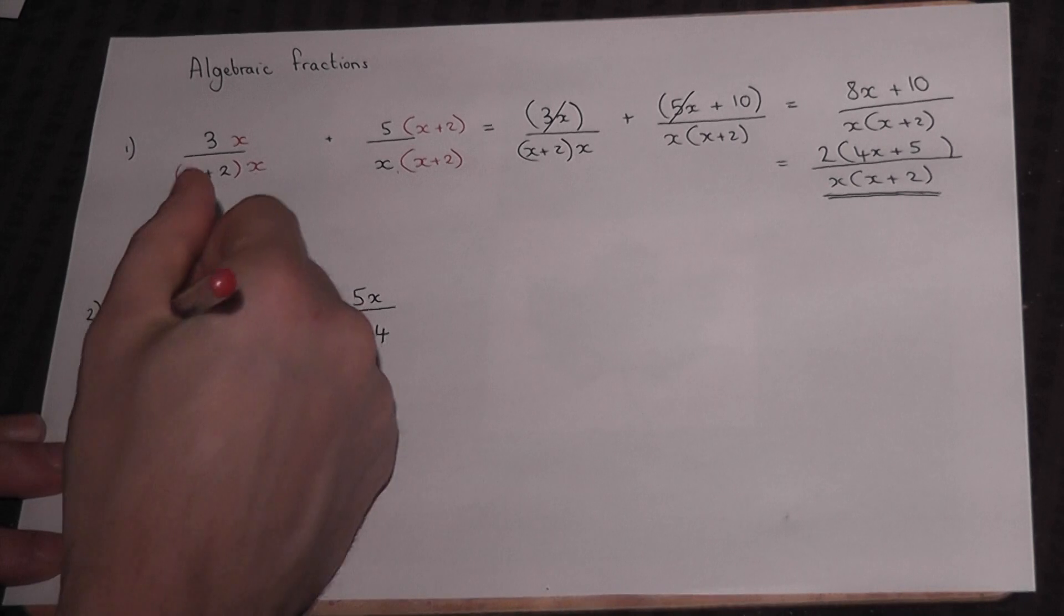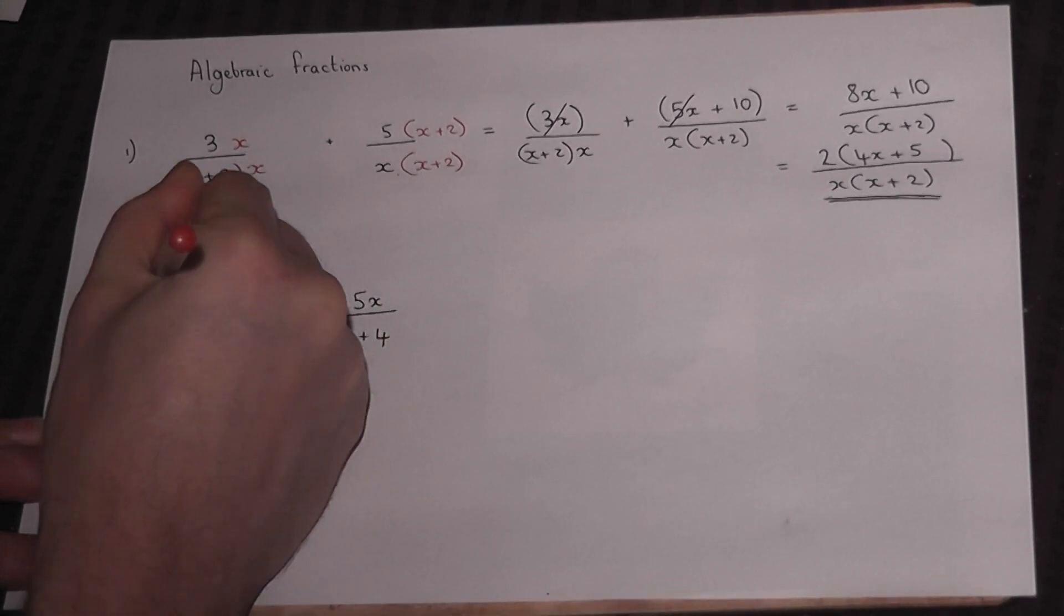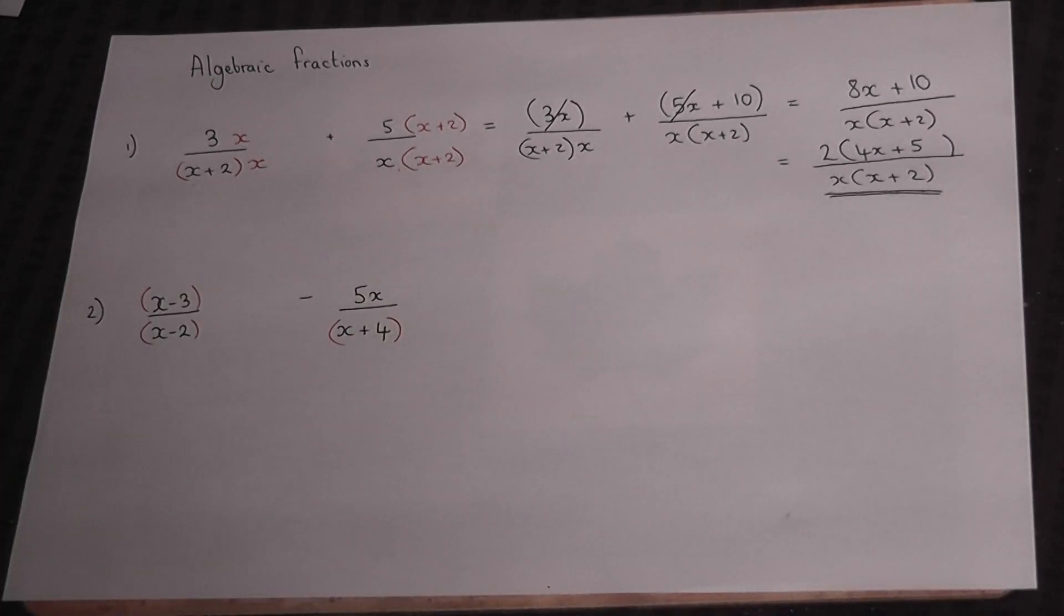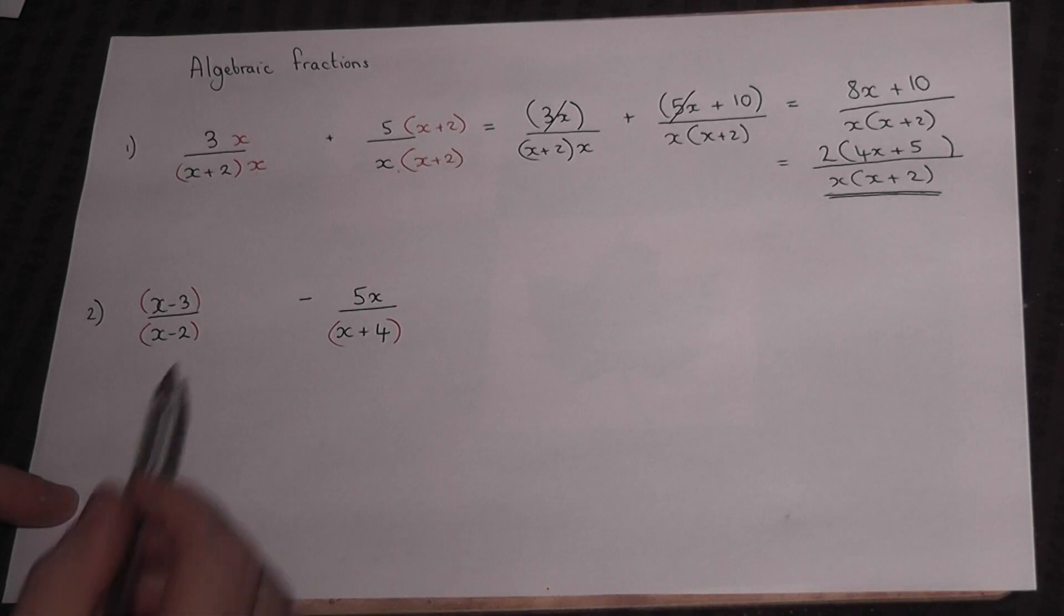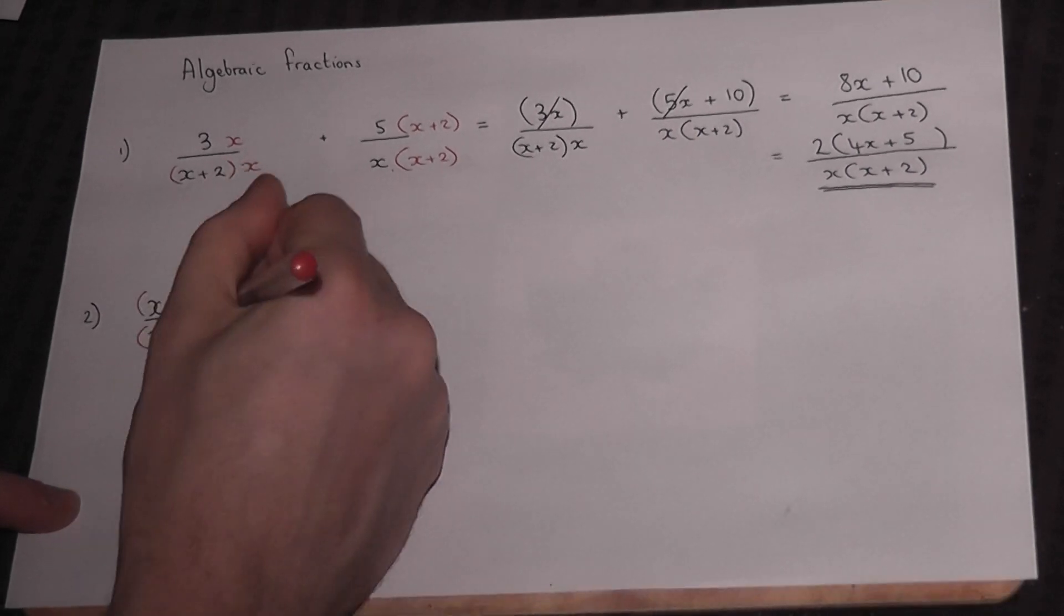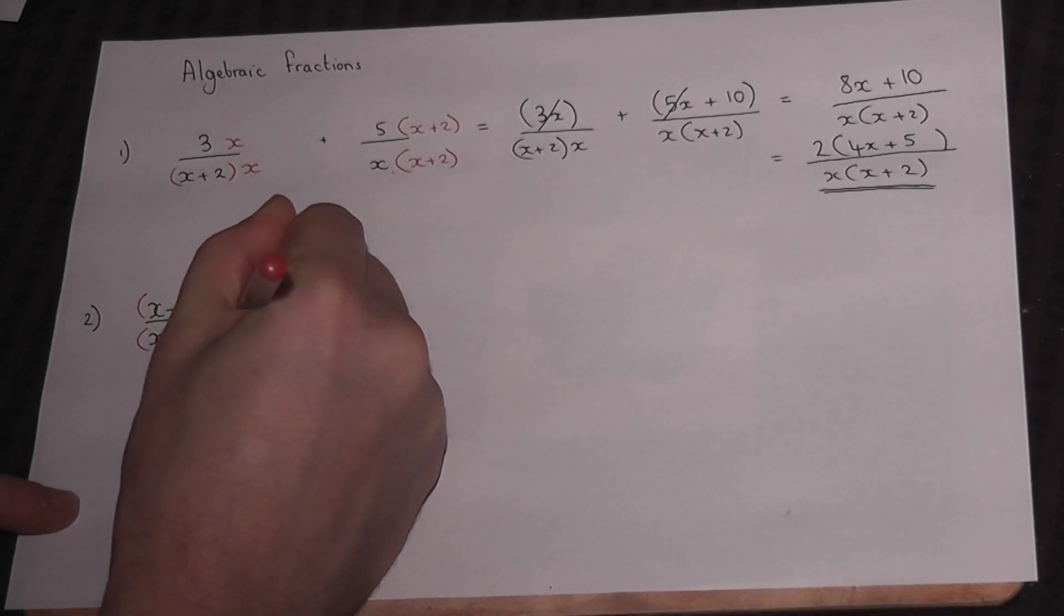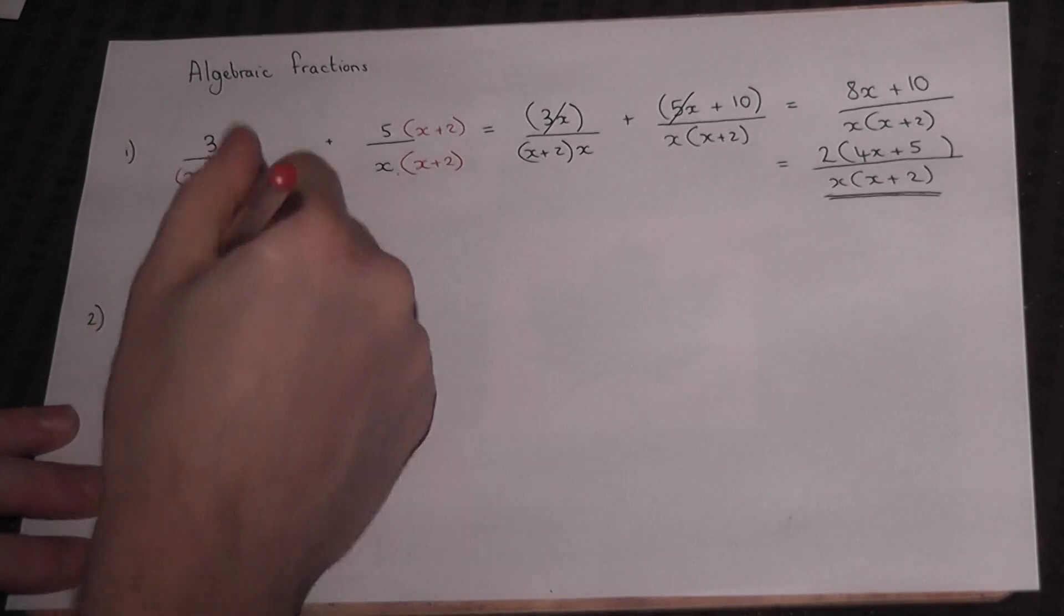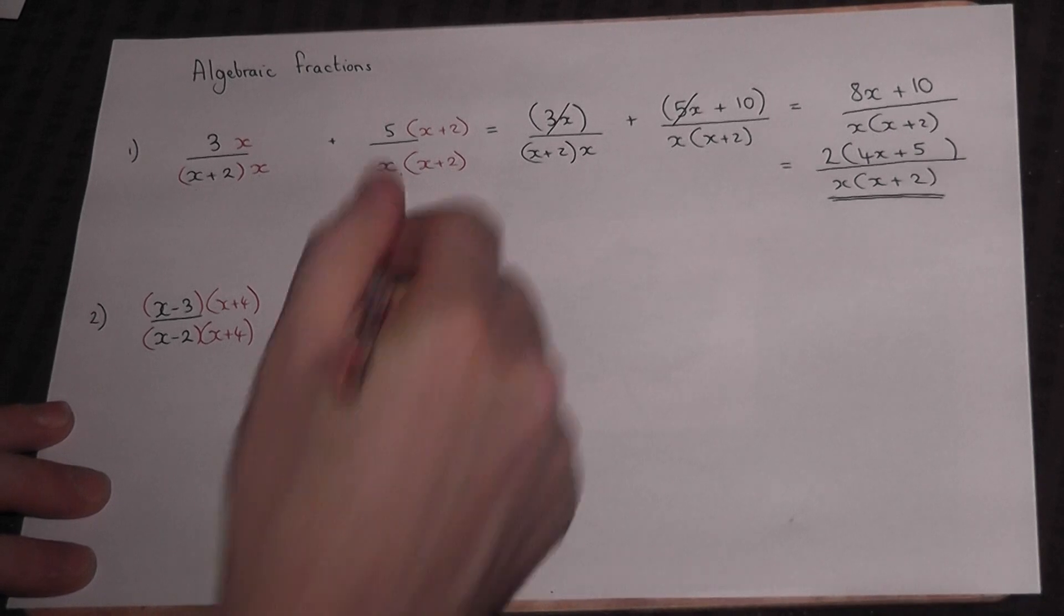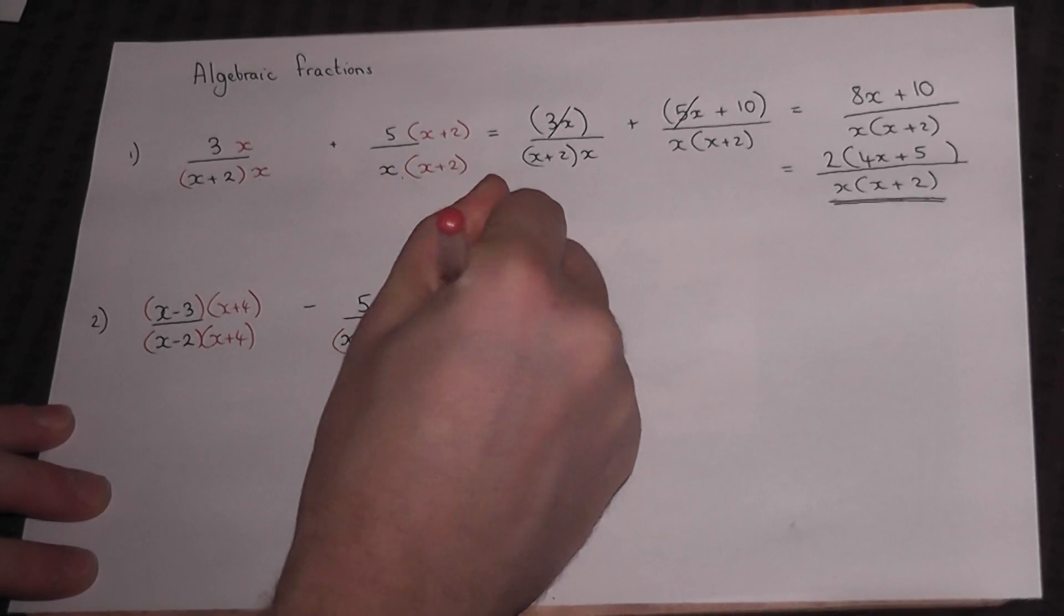This is where there is more than one thing either above or below the fraction. We must force these two fractions to have the same denominator. I take the x+4 and write it here, doing the same above. Then I take the x-2 and force that onto the other fraction.